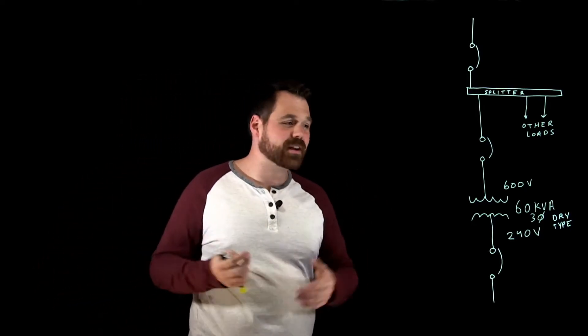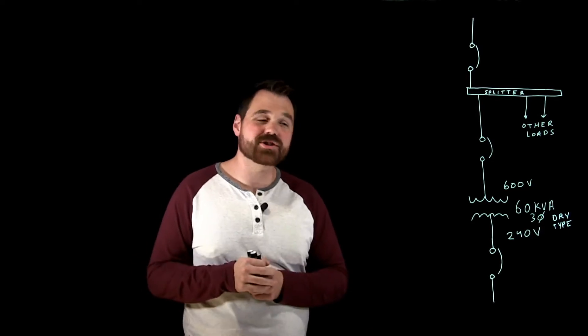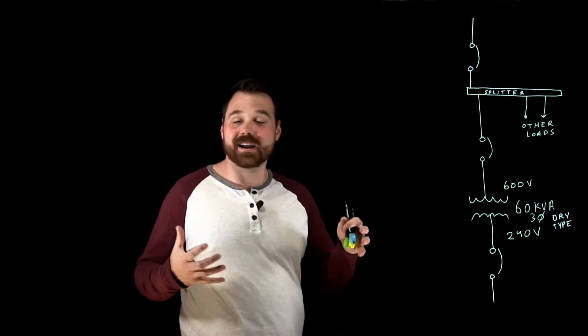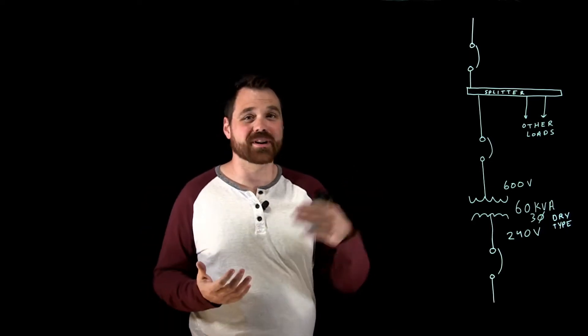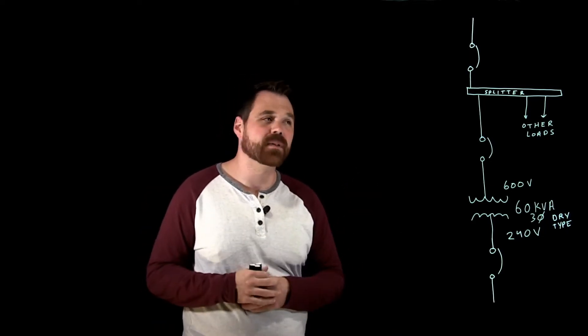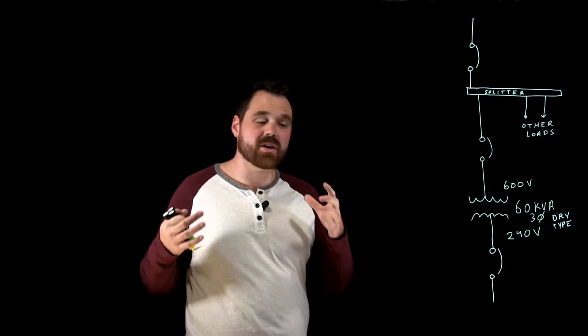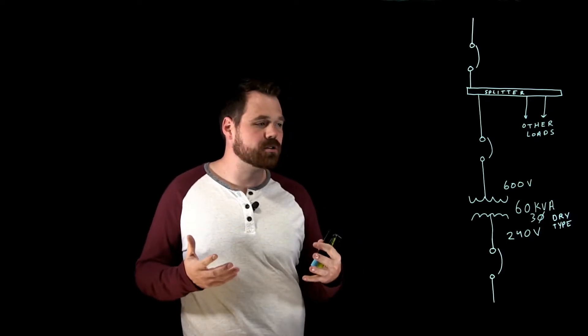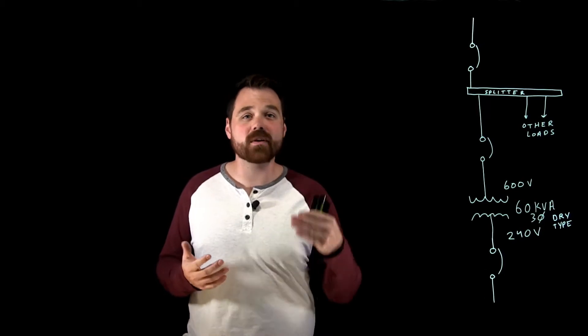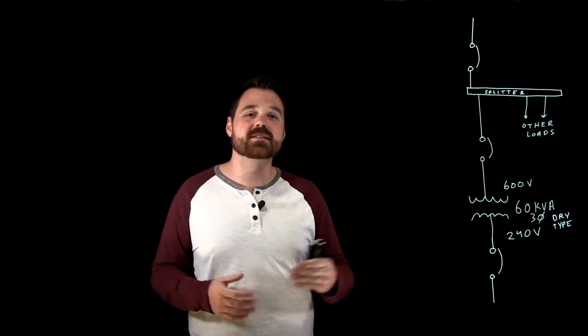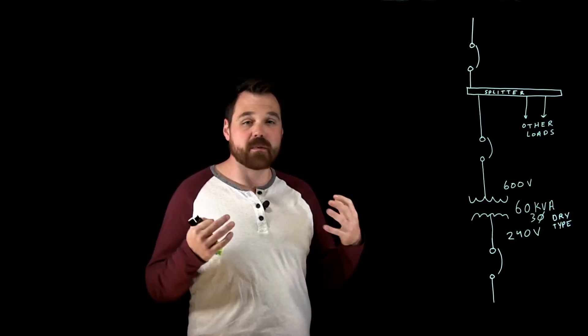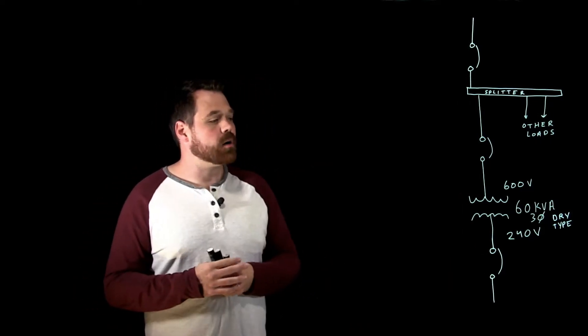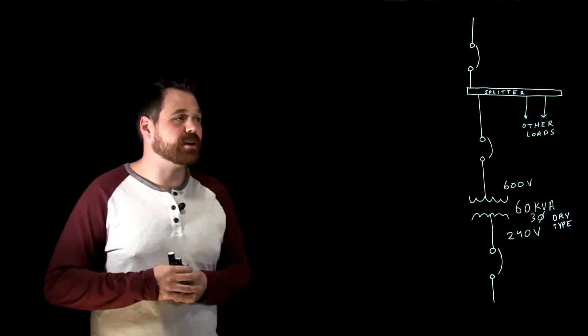If you're like me as an electrician, there's probably a good chance that you have or at some point will install a 750 volt or less dry type transformer. These are just devices that we are installing all the time and it's really important to ensure that we're sizing the overcurrent protection for these devices correctly. We want to make sure that our conductors and equipment and the load are all protected.